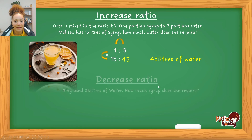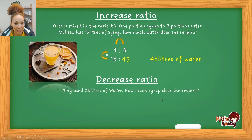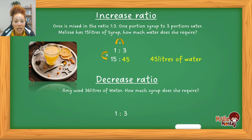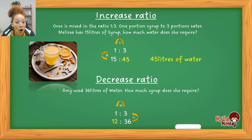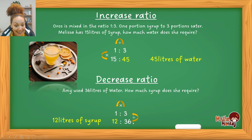Now let's look at decreasing ratios — the same method applies. Amy used 36 litres of water; how much syrup does she require? Starting with the ratio 1 : 3 and placing 36 under the 3 (water), the LVN method anti-clockwise gives: 1 ÷ 3 × 36 = 12. So for 36 litres of water you need 12 litres of syrup. It's a decreased ratio because 12 is less than 36.